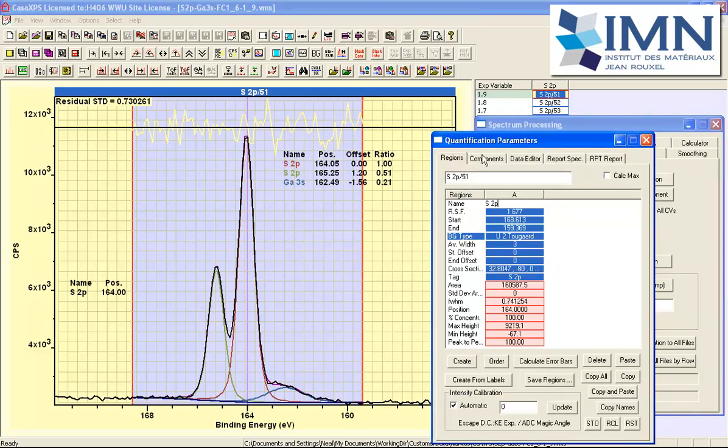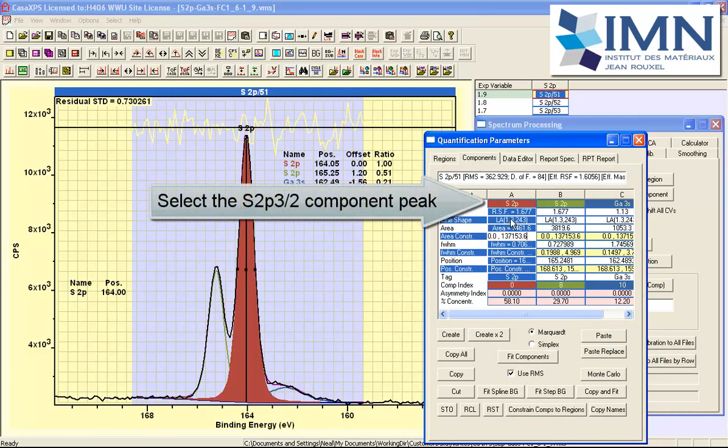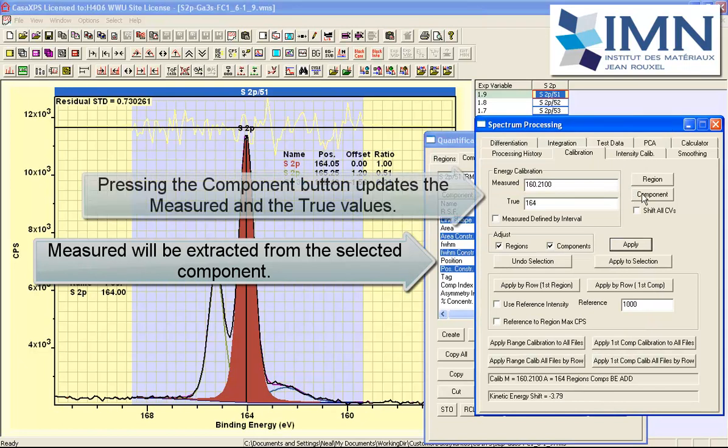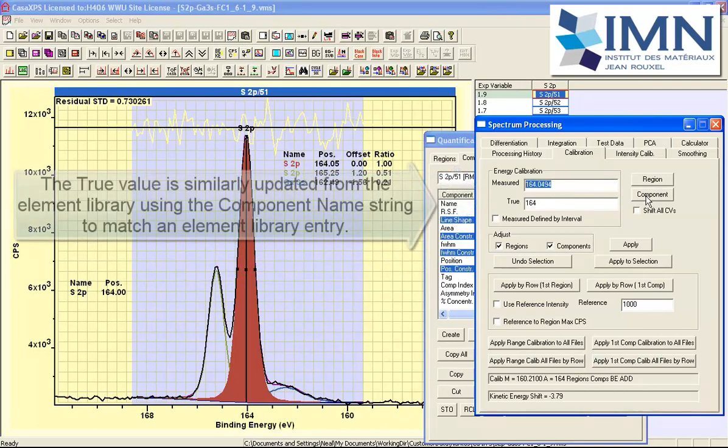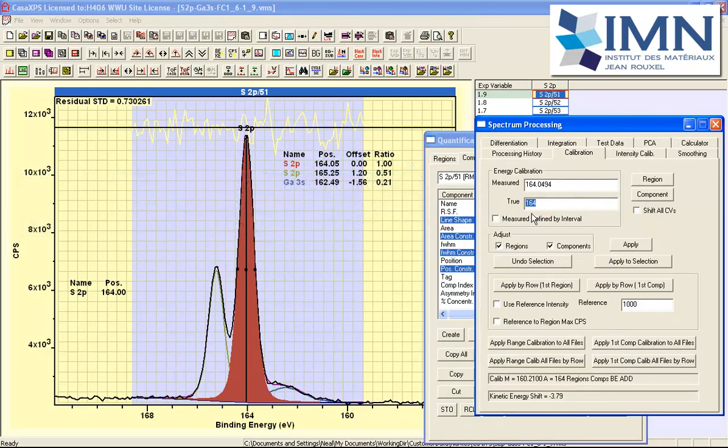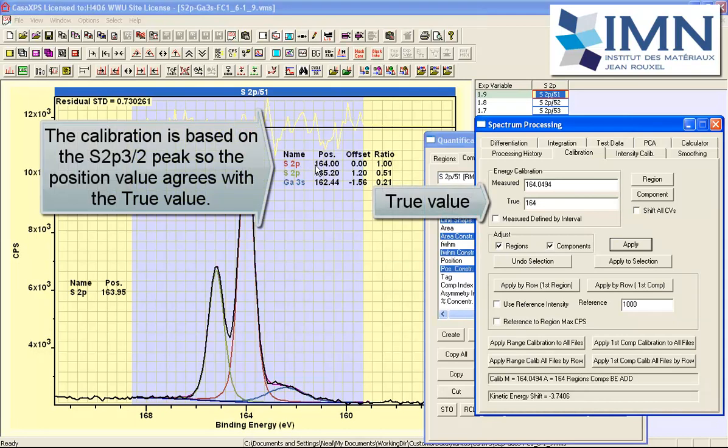So if we wanted to alternatively do the same procedure but this time use the components we would select the component and this is the three halves peak from the sulfur 2p doublet. And once again I go here and I can say component and this time it is brought in the component position not the region position because I selected the component button. And it is again based on the selected component. The true value is once again 164 and we are going to shift regions and components. And we are going to do the apply button so that only the active VAMAS block in the active tile will be processed.